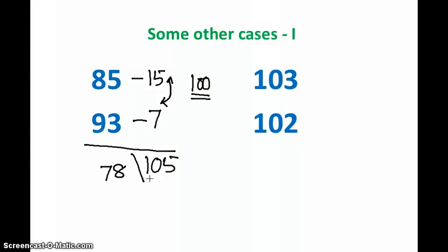We should carry this number forward to this side, as we do in case of normal addition. So what happens here is the one comes to this side now. This becomes 79 and the right side becomes 05, so now the answer is correct.